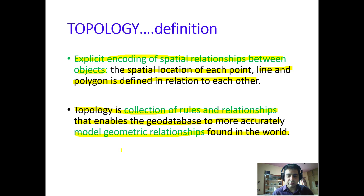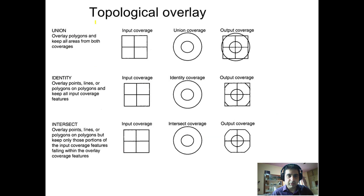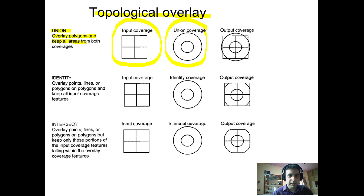To understand it better, let's look at topological overlay. For union, we have an input coverage in the form of a square and a union coverage in the form of a circle. The union function overlays polygons and keeps all areas from both coverages — every portion of the input coverage and every portion of the union coverage will be retained. This is the output using the union function.